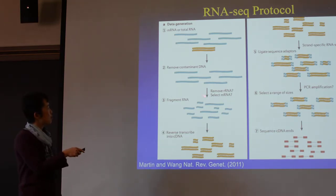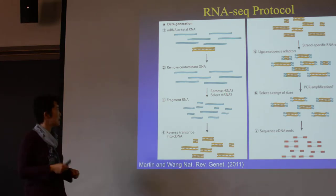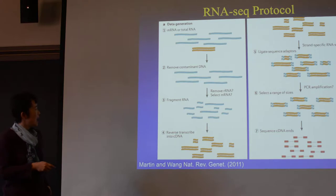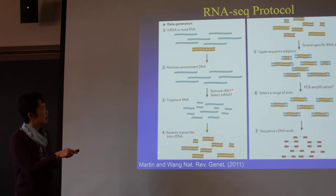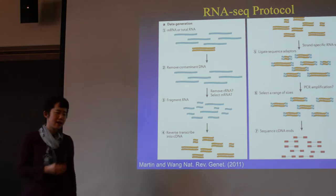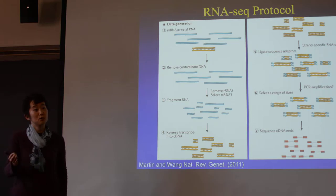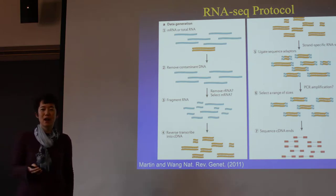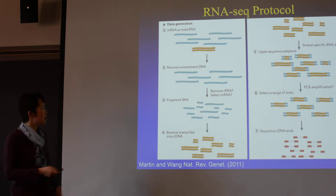Sometimes you also want to remove the ribosomal RNA, because these are too abundant — way too abundant. The ribosomal RNA not only are abundant, they don't really change too much between cells. You don't really care so much about rRNA expression, so you want to remove them.